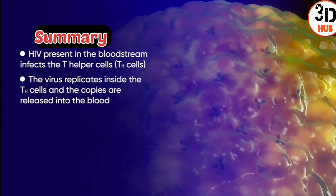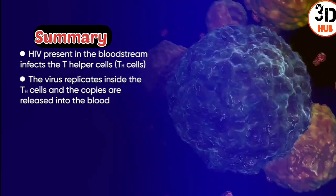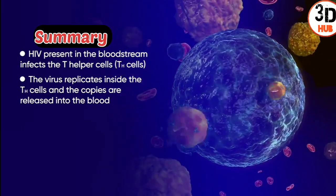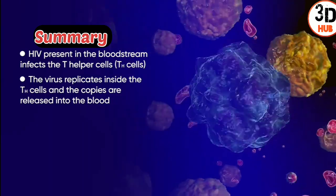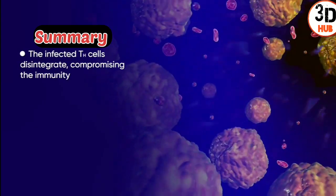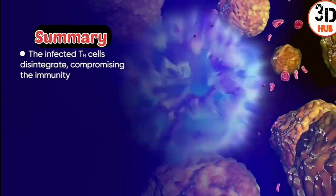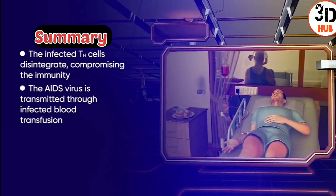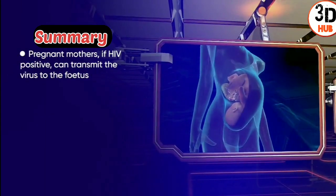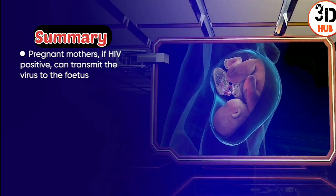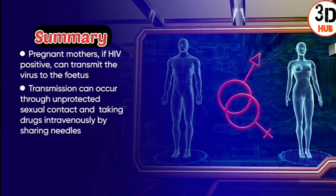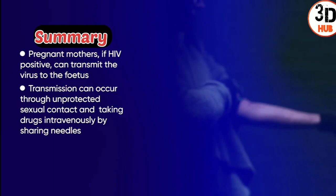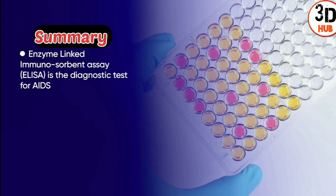This infection causes the TH cell to become diseased. Inside the TH cell, the virus replicates and is eventually released. The diseased TH cell finally disintegrates, and due to the destruction of TH cells, immunity is severely compromised. The AIDS virus is transmitted through transfusion of infected blood, from HIV-positive pregnant mothers to the fetus, through unprotected sexual contact, and by sharing needles used for intravenous drug use. AIDS can be detected by the diagnostic test enzyme-linked immunosorbent assay, ELISA.